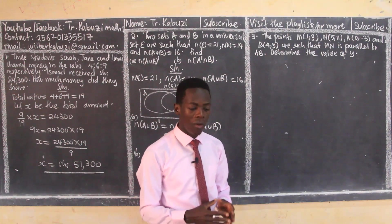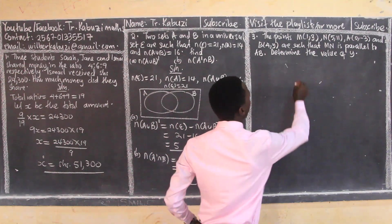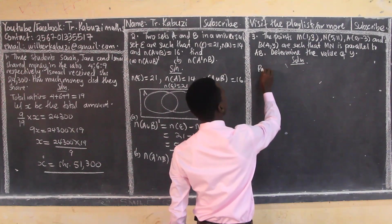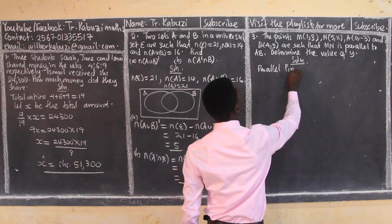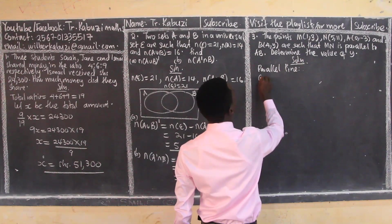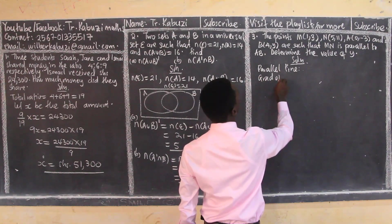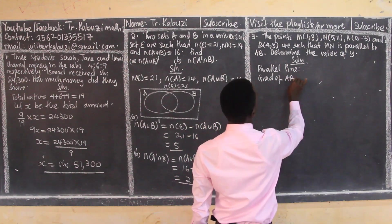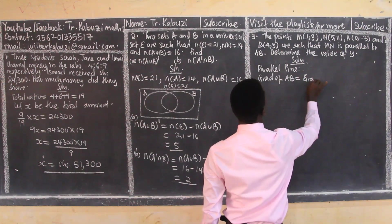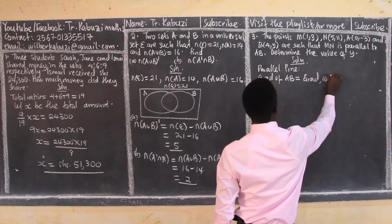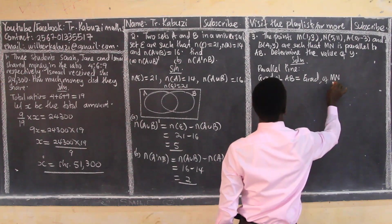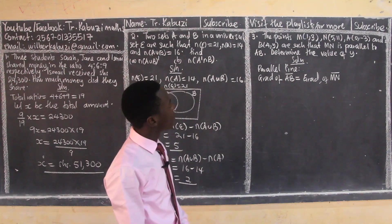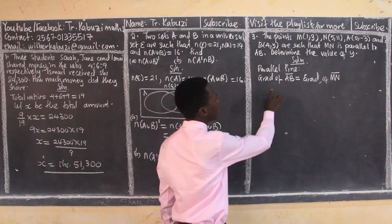So in simple terms, we say in our solution there are parallel lines. I will say that the gradient of the line AB is equal to the gradient of MN. Some people took them as vectors.